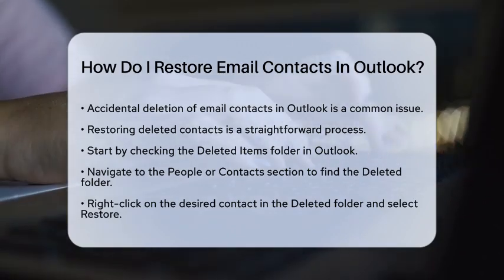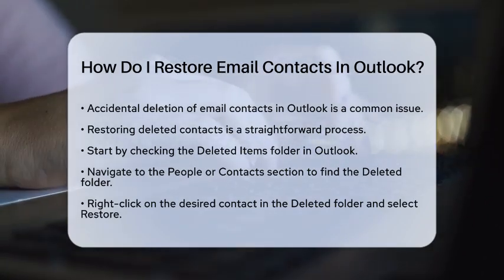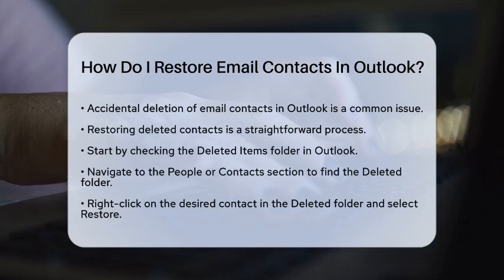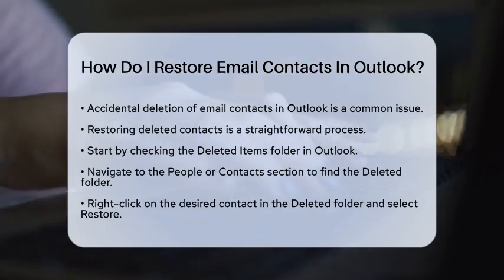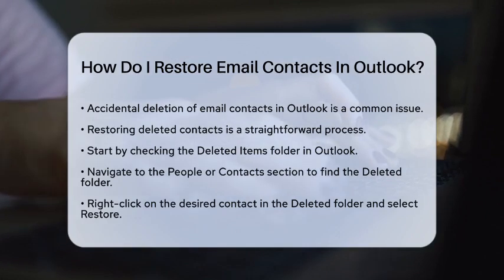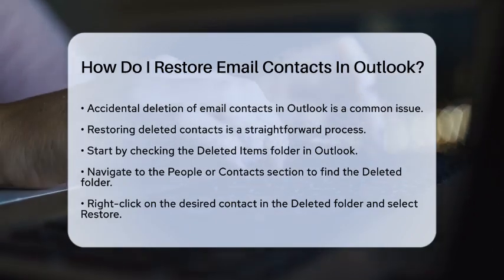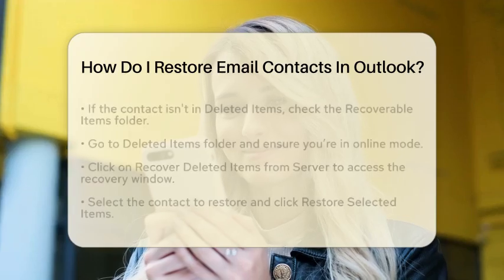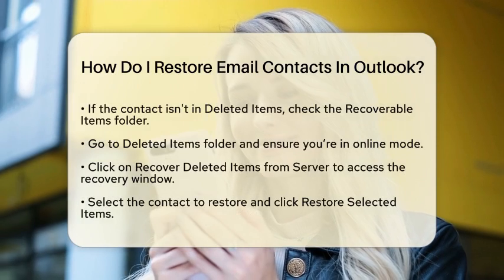First, check the deleted items folder. When you delete a contact, it usually goes to this folder. Open Outlook and head to the People or Contacts section. Look for the deleted folder and click on it. If you see the contact you want to restore, right-click on it and select Restore. Your contact is back in your main list.